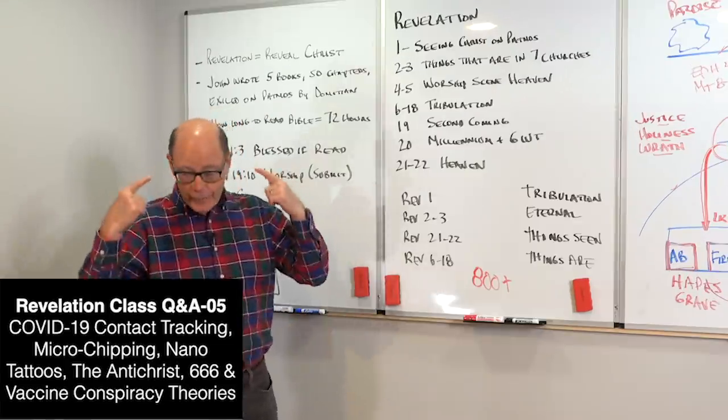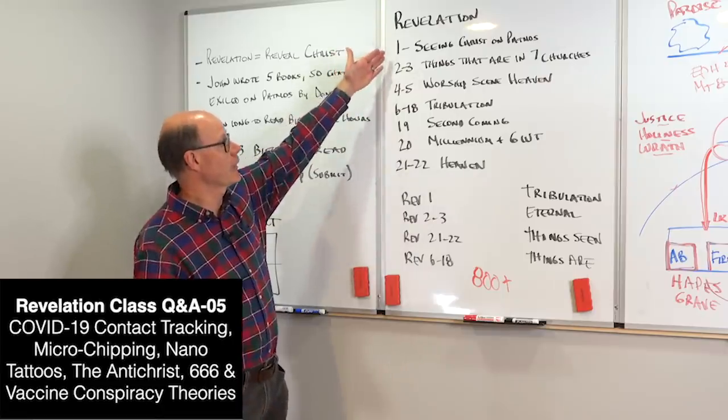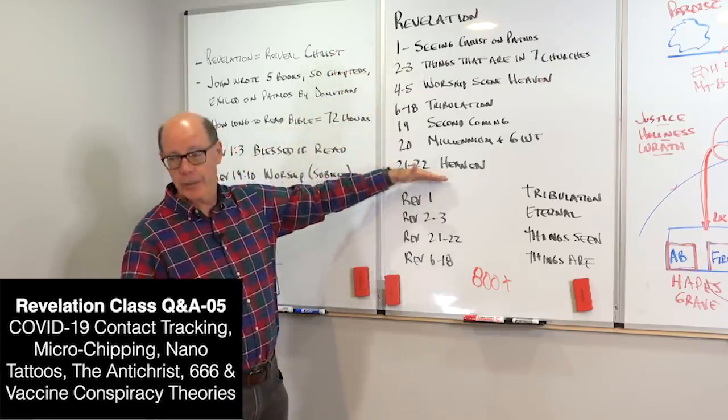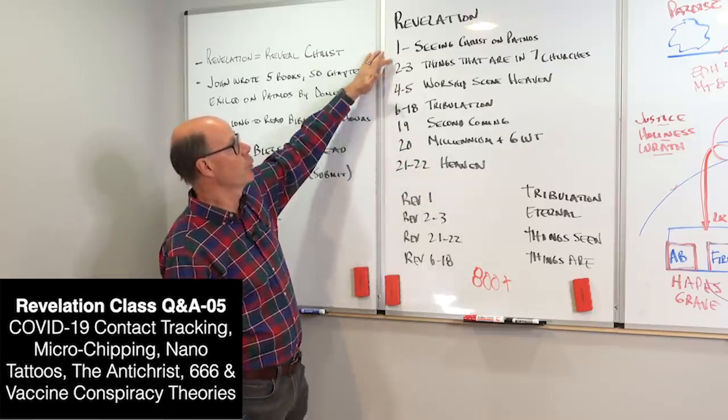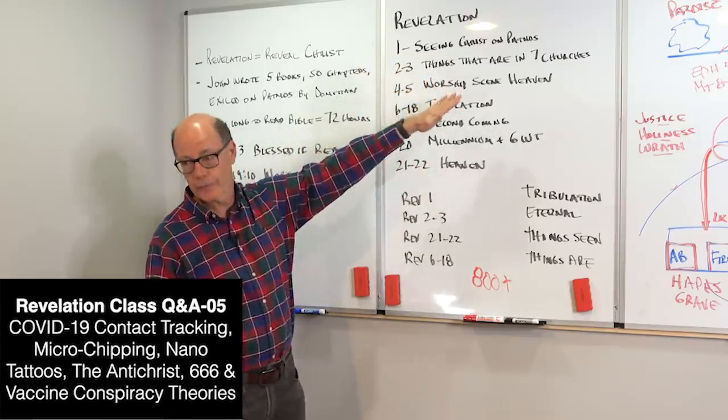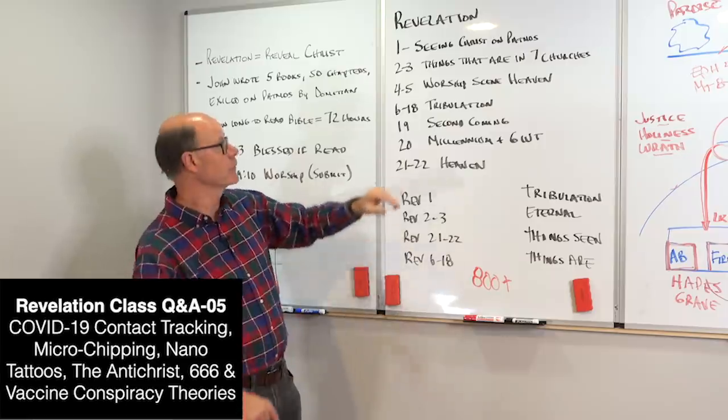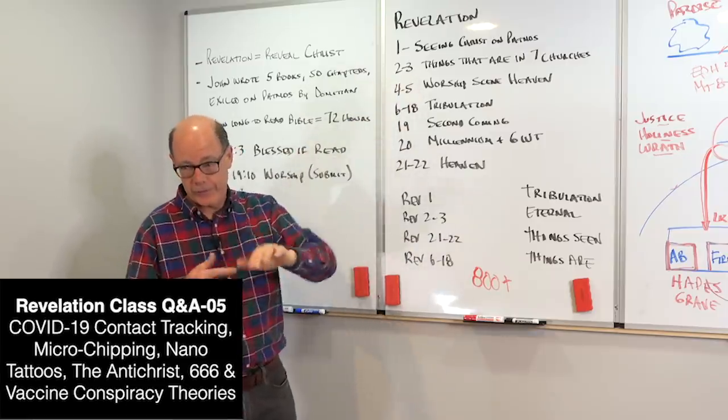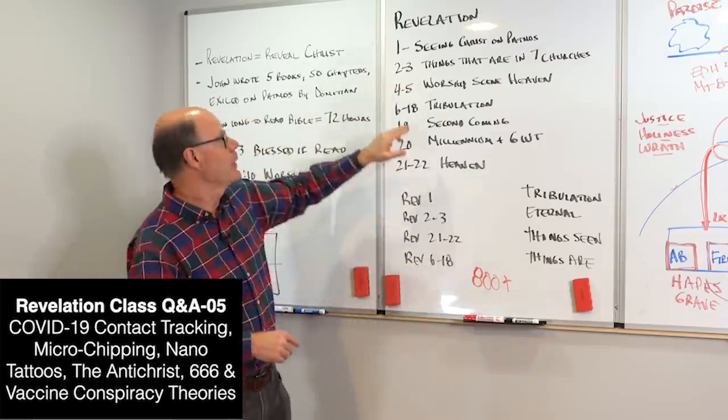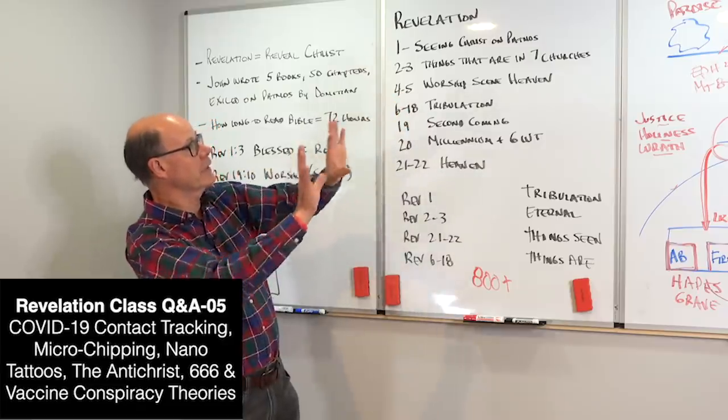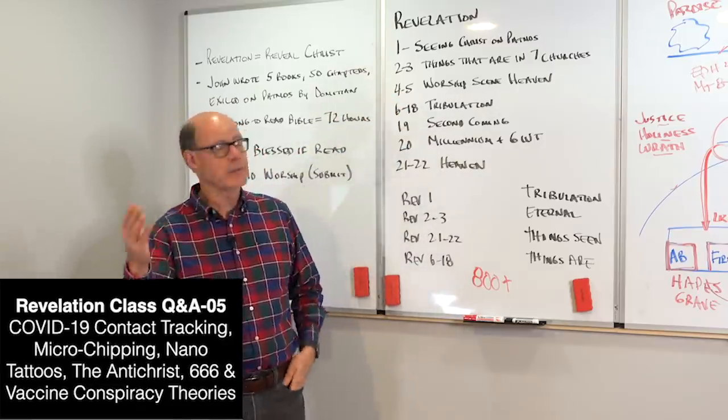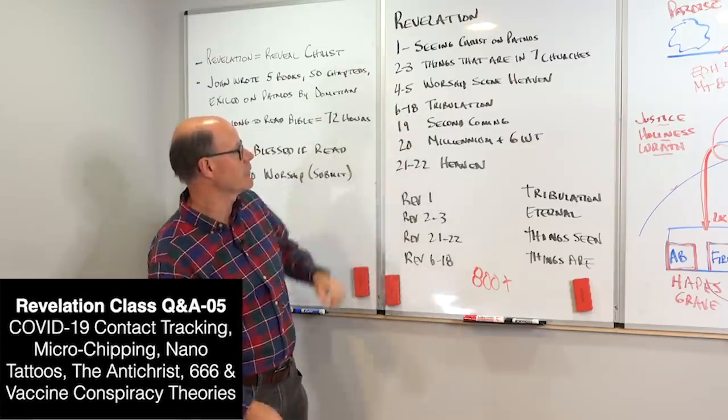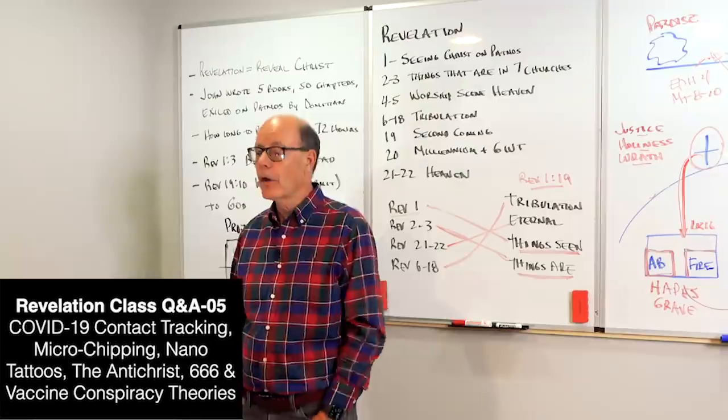Great question. In your mind, you should always think of Revelation in that chart you see me constantly showing in class. Revelation 1 is seeing Christ in Patmos, so John is on earth, sees Jesus. 2 and 3, Jesus tells him about the churches. 4 and 5, we get to see the worship scene in heaven. Now, we're talking about the Antichrist and the Beast and the Tribulation period that's chapter 6 through 18.